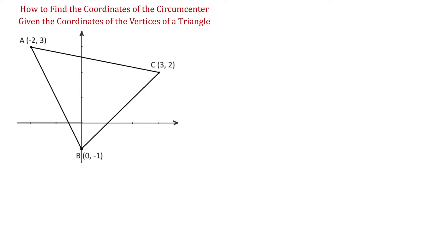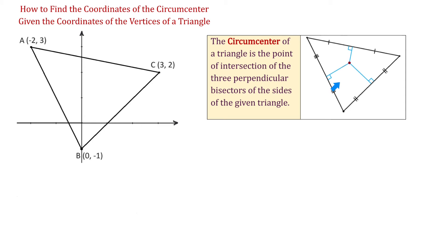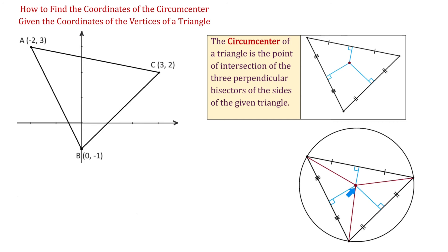In this figure we have a triangle with the given vertices A, B, and C, and we need to find the coordinates of the circumcenter. The circumcenter of a triangle is the point of intersection of the three perpendicular bisectors of the sides of the given triangle. So, if for each side we find the midpoint, then we draw a perpendicular, then these perpendiculars will meet at a point called the circumcenter. The circumcenter is also equidistant from each of the vertices, and therefore it represents the center of the circle that passes through these vertices.